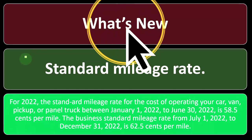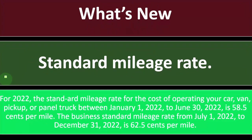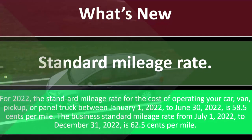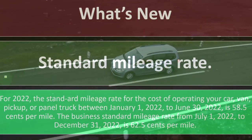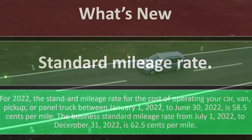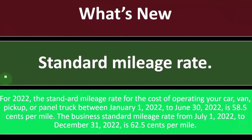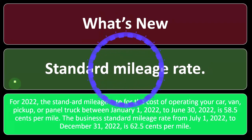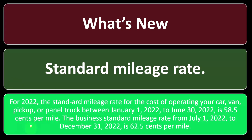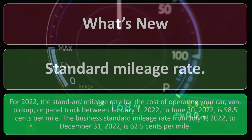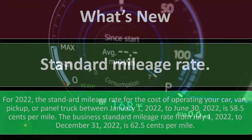The standard mileage rate for 2022 — the cost of operating your car, van, pickup, or panel truck — from January 1st, 2022 to June 30th, 2022 is 58.5 cents per mile. We'll talk more about allowable deductions for rental property. For auto miles, you can take actual deductions or use the mileage method. The business standard mileage rate for July 1st, 2022 to December 31st, 2022 is 62.5 cents per mile.